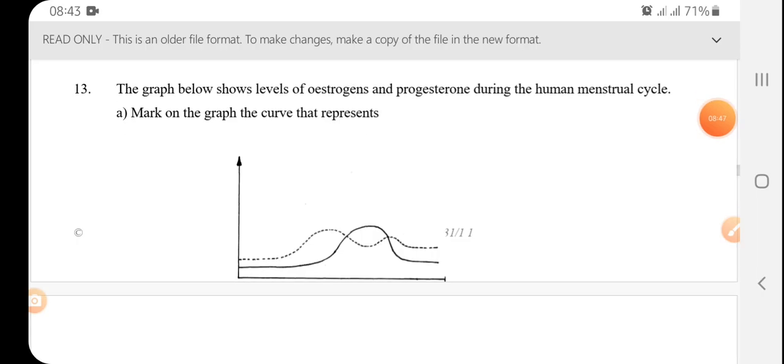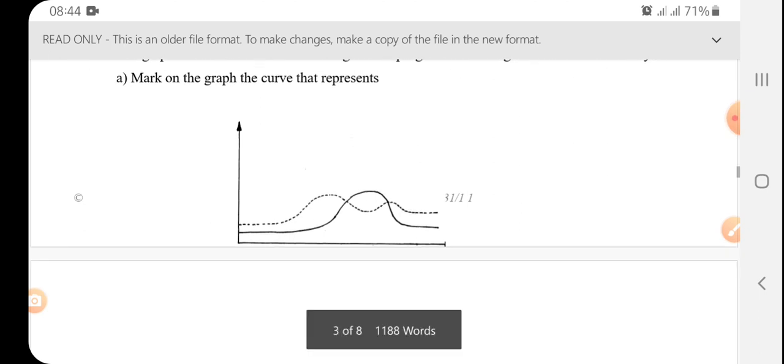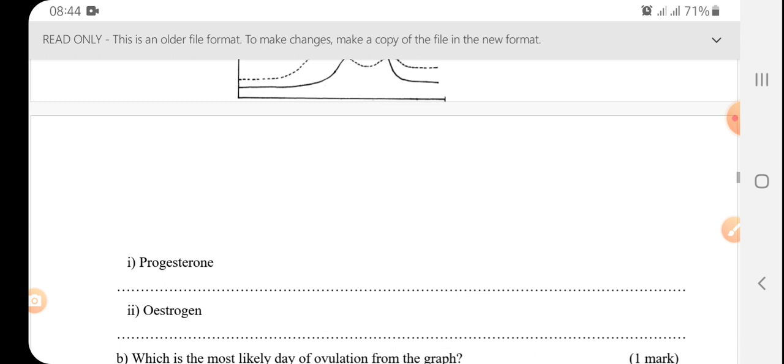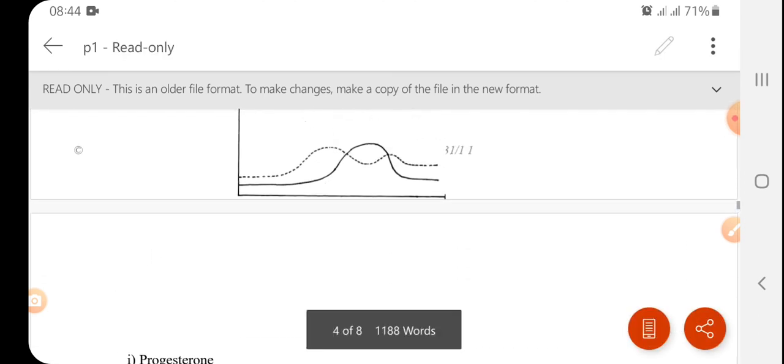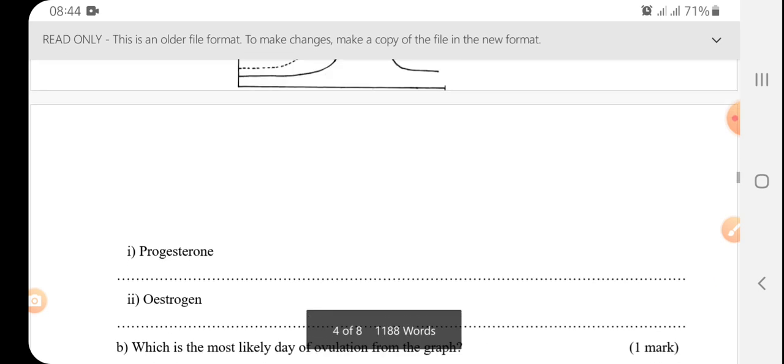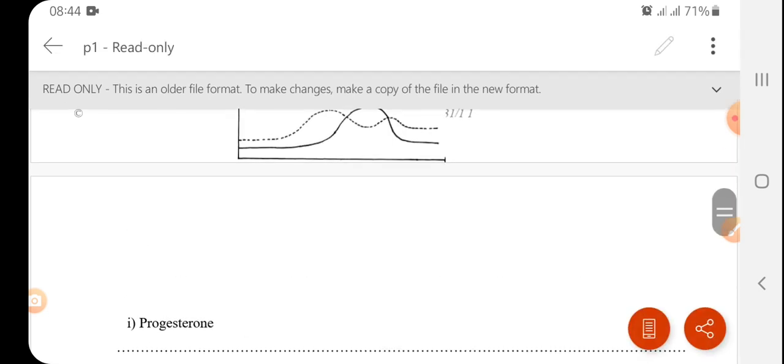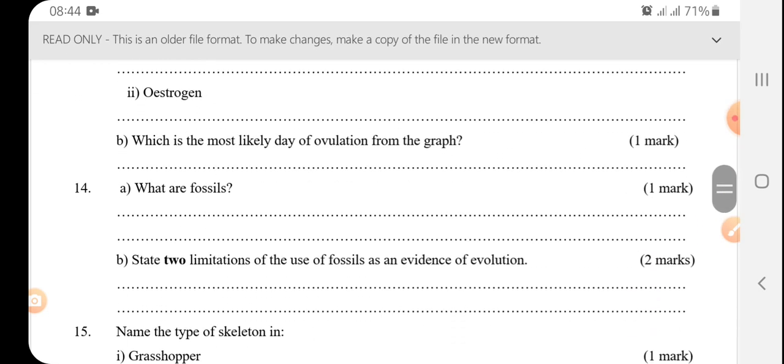The graph below shows levels of estrogen and progesterone during the human menstrual cycle. Mark on the graph the curve that represents progesterone. So progesterone is the continuous line, while estrogen is the dotted line, which is the most likely day for ovulation. So the likely day is on the 14th.